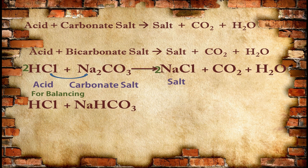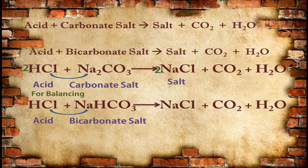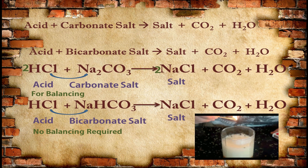Let's see the same example with bicarbonate salt. HCl is acid and NaHCO₃, sodium bicarbonate, is a bicarbonate salt. Na₂CO₃, sodium carbonate, is also known as washing soda and NaHCO₃, sodium bicarbonate, is known as baking soda. When these two react, the formula of salt will be the same — NaCl — made by the same method, giving NaCl, CO₂, and H₂O. Here no balancing is required because sodium is already balanced and hydrogen is also balanced.